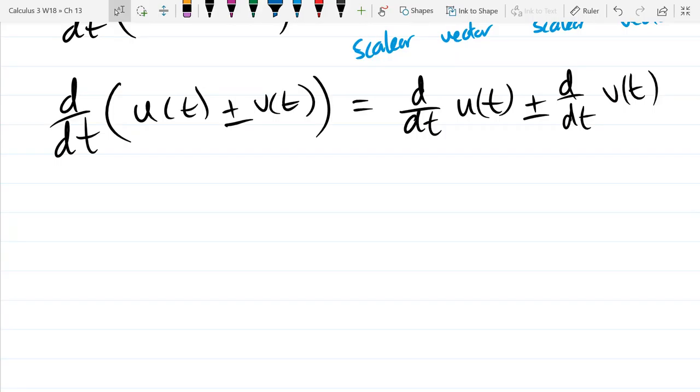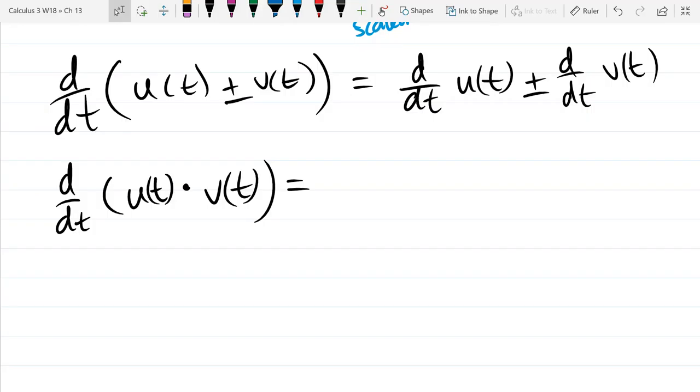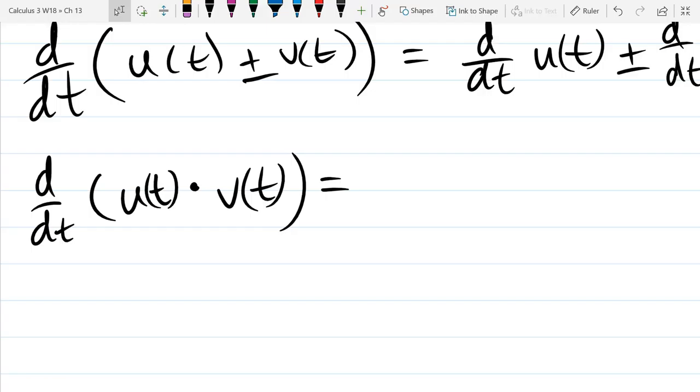And now there's two product rules because there's two vector products. There's a cross product and a scalar product. So we're going to look at both products. We did the dot product first. So what do you think this product might be? The result of a dot product is a number. So the way this one works is we're still going to have the product. So it'll be u prime dot v plus u dot v prime. So it's basically the product rule except specifically it's a dot product rule.